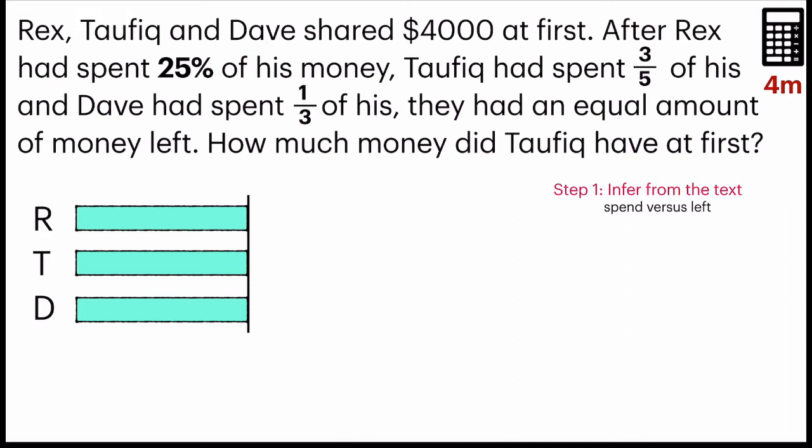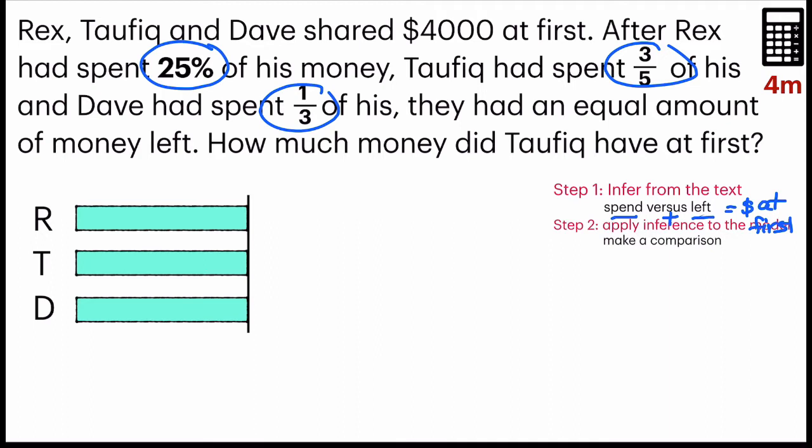Next, we know that they have spent 25% and then the other person spent 3/5 and Dave spent 1/3. But we do know that the amount of money that you spend plus the amount of money that you have left is equals to the money at first. So we can tap on this portion to do a comparison. That's our step 2. We will apply these 3 inferences to the model. And from there, we are able to make a comparison. So let's do step 1 and 2 together now.